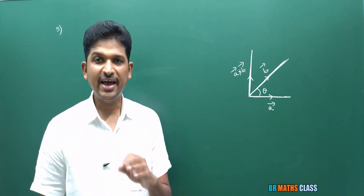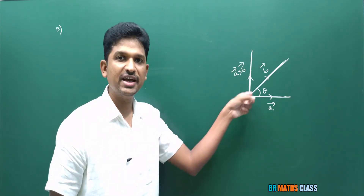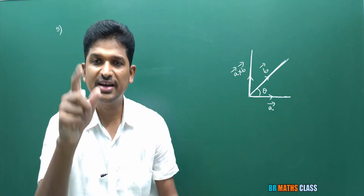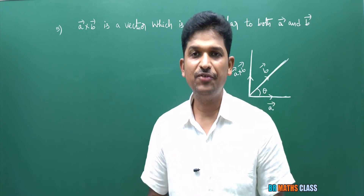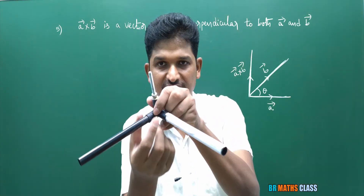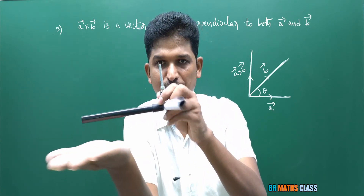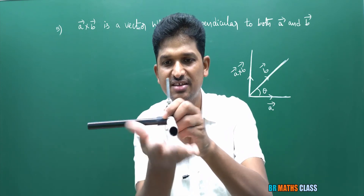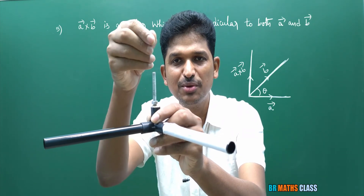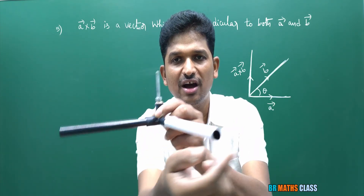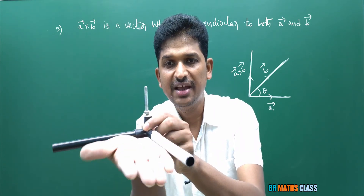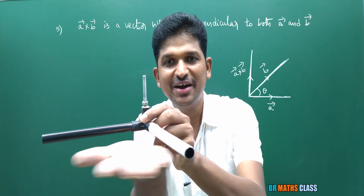The direction of a̅ cross b̅ is along the direction of n̂. You can see this is perpendicular to a̅ and perpendicular to b̅. So from now on, if someone asks to find a vector perpendicular to both a̅ and b̅, we will calculate a̅ cross b̅. Moreover, a̅ cross b̅ is perpendicular to the plane generated by a̅ and b̅ — not just perpendicular to the individual vectors, but perpendicular to that entire plane.